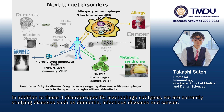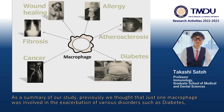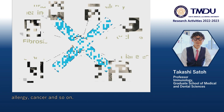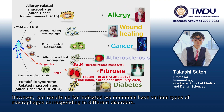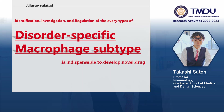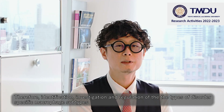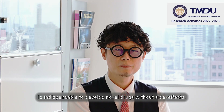In addition to these three disorder-specific macrophage subtypes, we are currently studying diseases such as dementia, infectious diseases, and cancer. As a summary, previously it was thought that just one macrophage was involved in the exacerbation of various disorders such as diabetes, allergies, cancer, and so on. However, our results indicate that every mammal has various types of macrophages corresponding to different disorders. Therefore, identification, investigation, and regulation of every type of disorder-specific macrophage subtype is indispensable to develop novel drugs without side effects. Thank you for watching.